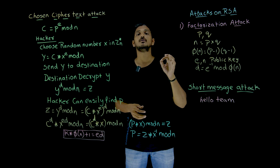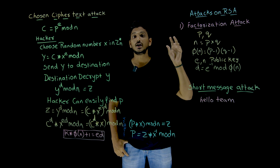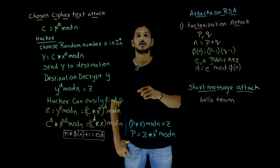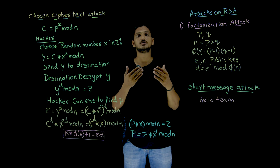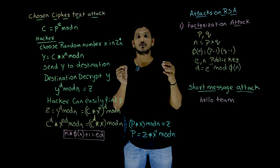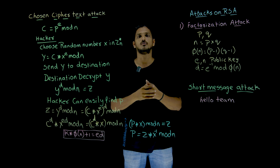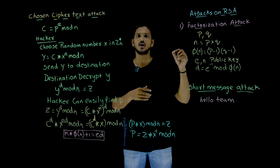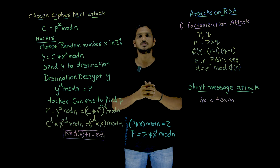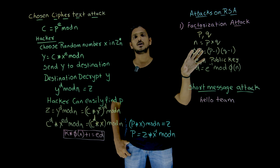But identifying Phi of N is very, very difficult because we are going to pick large numbers. P and Q are of size 512 bits. When you multiply them, you are going to get an N value of 1024 bits — almost close to 300 decimal digits. So identifying Phi of N requires the prime factors of N. Finding the prime factors is very, very difficult because it is an exponential algorithm. Exponential algorithms will take years to execute if the N value is large. That is why factorization attack is not possible on the RSA algorithm.